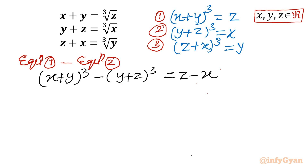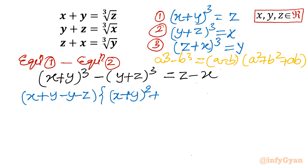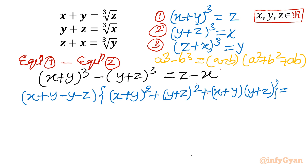Now applying the a³ minus b³ formula: a³ - b³ = (a - b)(a² + b² + ab). Applying this to our LHS: the first bracket gives (x+y) minus (y+z), and the second bracket gives (x+y)² plus (y+z)² plus (x+y)(y+z), all equal to z minus x on the right-hand side.